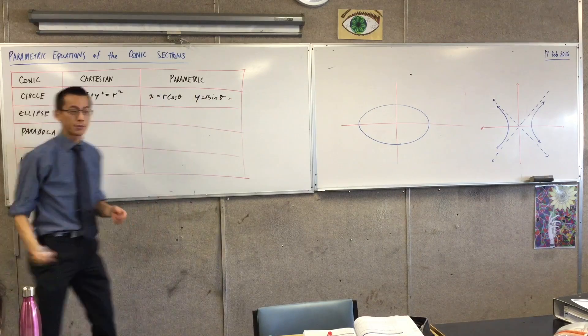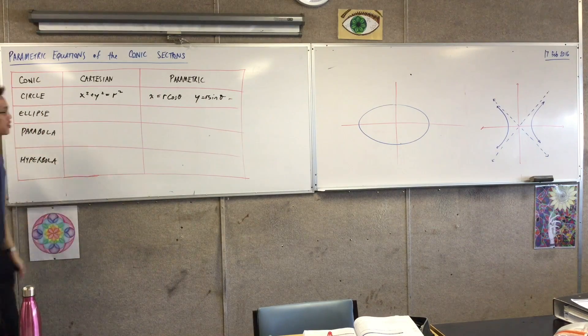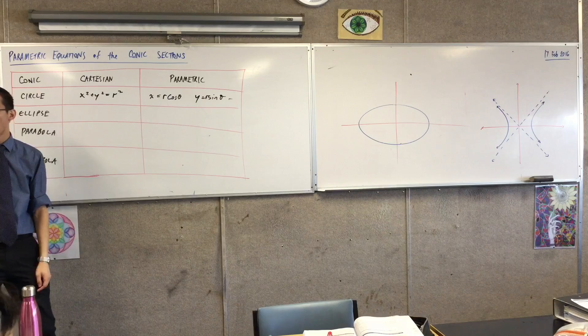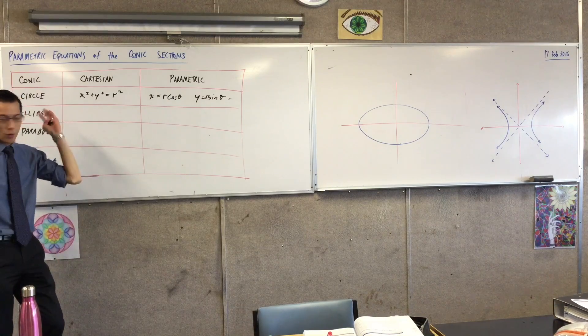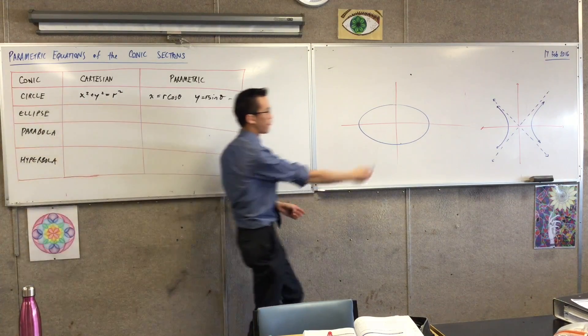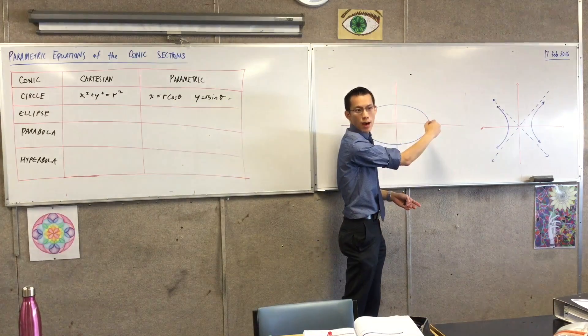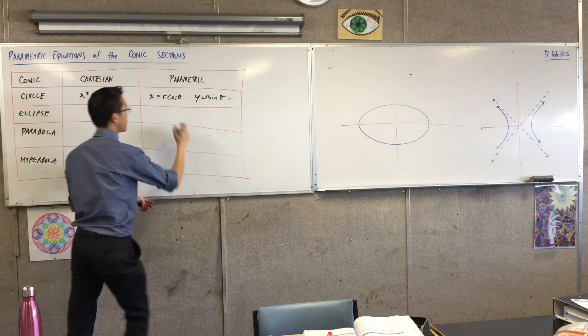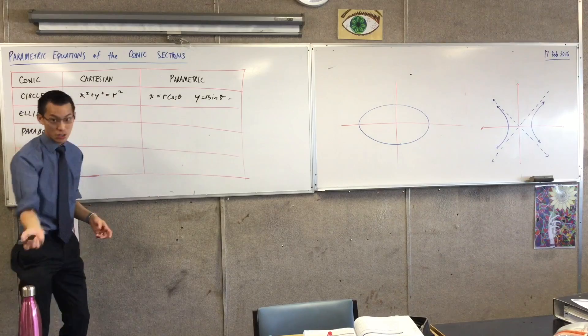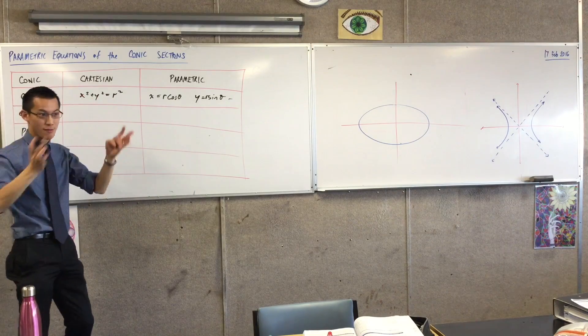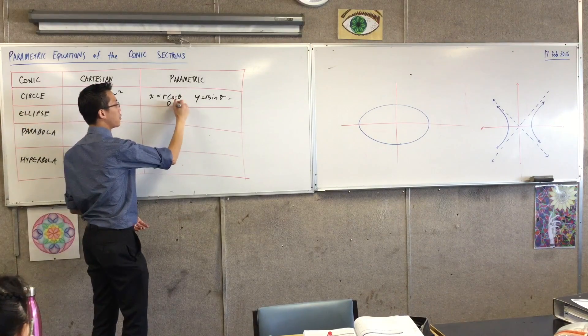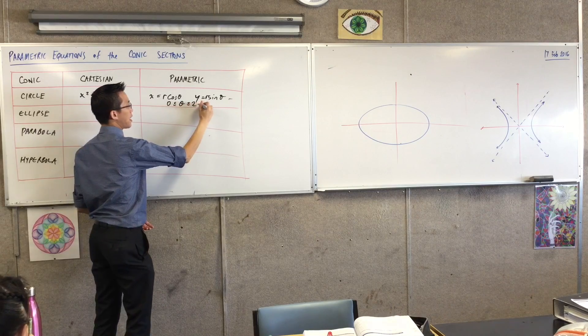Also important to mention, there's kind of a range restriction on theta, right? It can't just go anywhere, because once you go around a full revolution, you've come back to where you started. So the way I would say this is, as extension 2 students, thinking in radians rather than in degrees, I can go from 0 to 2 pi. That's one full revolution.